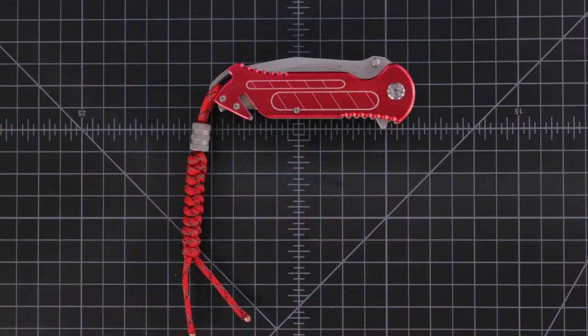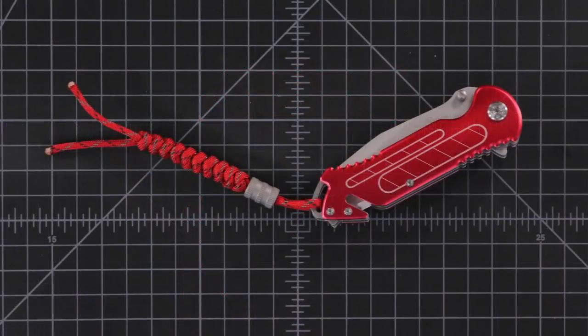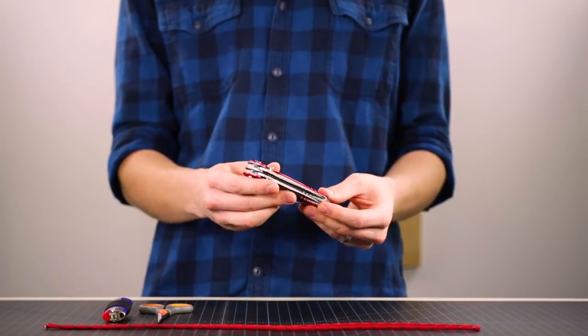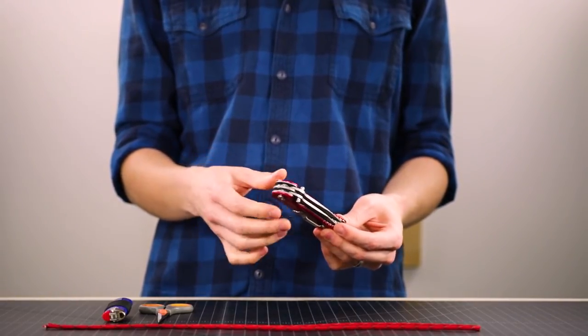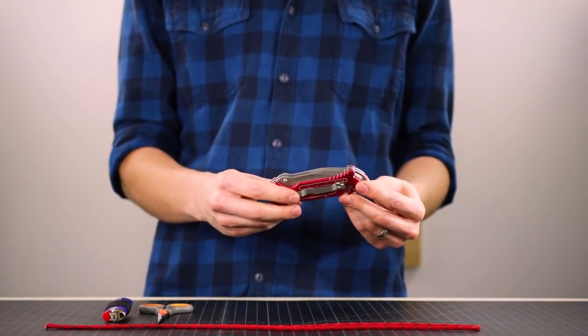People put paracord fobs on their knives for a couple different reasons. One is that a bright colored paracord tassel on the knife can make your knife easier to find in the bottom of a big bag. It can also create a little bit longer of a grip for a really small knife that only fits two or three fingers. Still others just add it because they like the looks of it.